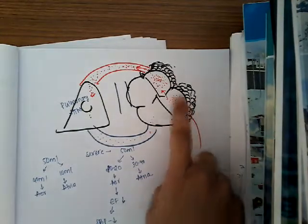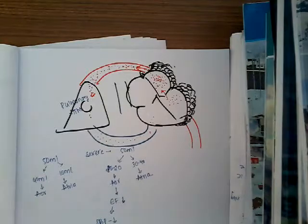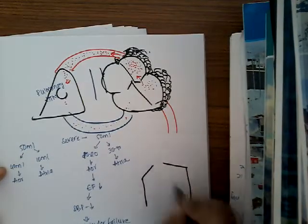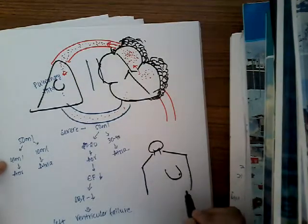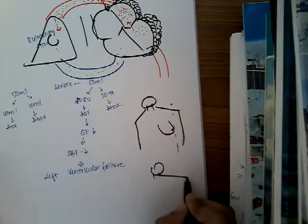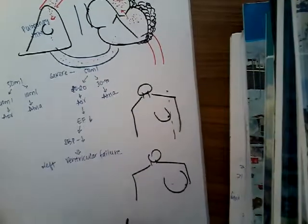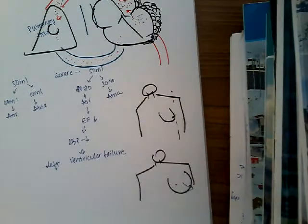There is dilatation and hypertrophy of the left ventricle and left atria. Because of the dilatation of the left ventricle, the apex beat — which we feel due to the left ventricle — is shifted. Normally the apex beat is in the fifth intercostal space, half an inch medial to the midclavicular line. But because the left ventricle is dilated, the apex beat is shifted downwards and laterally.